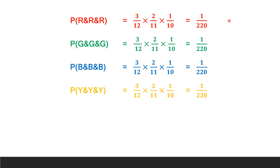Thus, the probability that all 3 balls are of the same color can be calculated as follows. Probability that all 3 balls are red equals probability of the first red ball × probability of the second red ball × probability of the third red ball, i.e., 3/12 × 2/11 × 1/10. This equals 1/220.